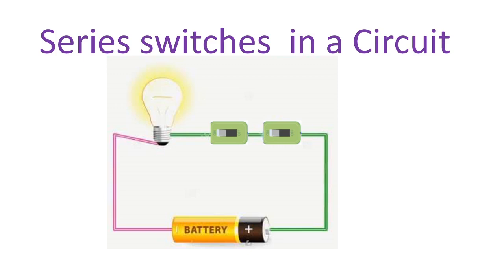In the equivalent series circuit, the bulb will only glow if the two switches are on. And if one of the switches is off, the light will not glow.